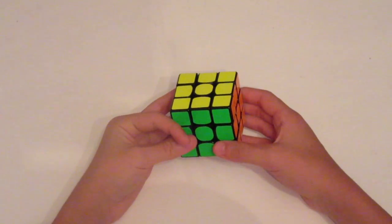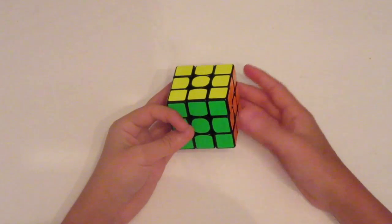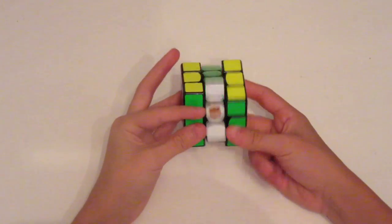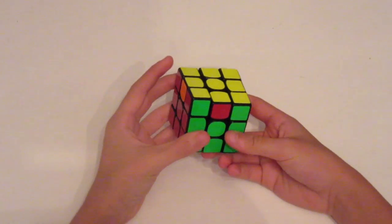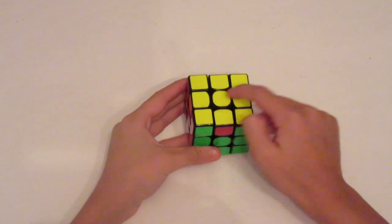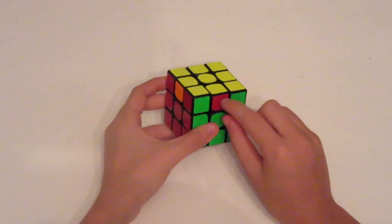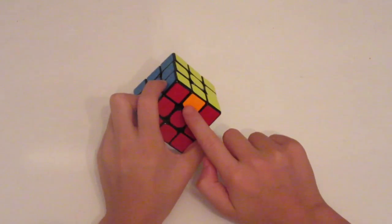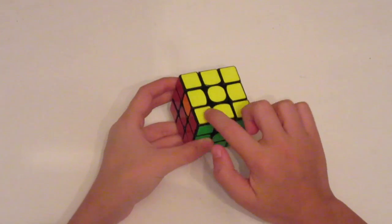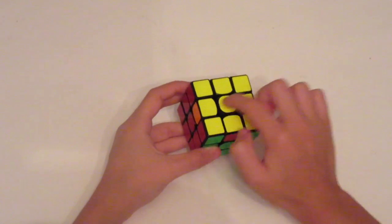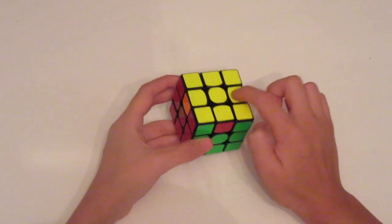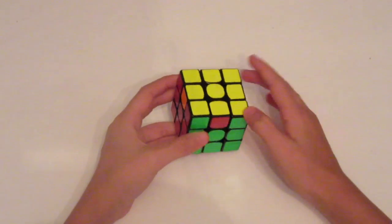Alright, so there's two different U-perms: U-A and U-B. I'll show you U-A real quick. This is U-A - when all the pieces need to rotate, all the edges. The red edge needs to go here, orange edge needs to go here, and green edge needs to go here. When it's moving in a clockwise direction, that's U-A, and in a counterclockwise is U-B.